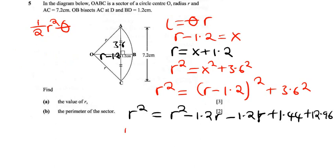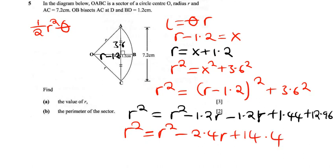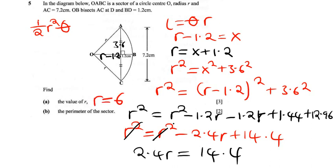So what we have is R² equals R² minus 2.4R, and then 1.44 plus 12.96. 12.96 added to 1.44 is 14.4. Remember our goal is to find the value of R: the R² terms subtract, and we have 2.4R on the other side equal to 14.4. Now 14.4 divided by 2.4 gives R equals 6. So R is equal to 6 — we've found the value of R.